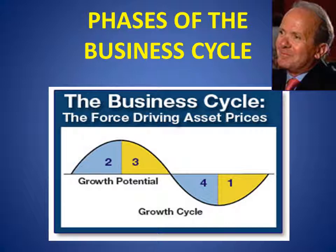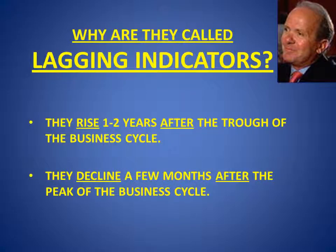There are many lagging indicators. I will show just a few of them, but as long as you recognize their importance, you can find some by yourself. Why are they called lagging indicators? Because they start rising one to two years after the trough of the business cycle — after the economy starts expanding. And they usually decline after the peak of the business cycle, but only after a few months, around six months, of slowdown. So their increase or decrease signals very important transitions in the business cycle.